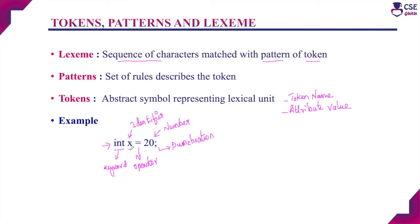Next, 'x' is an identifier. Considering 'x', it will not be matched with any reserved words in the list. Any combination of letters or digits is nothing but an identifier, so 'x' is an identifier. The equal sign will be compared by the pattern and will match with the operator, so the token name is operator. '20' is a number, and semicolon will come under punctuation symbol. So the lexical analyzer initially recognizes input characters into a meaningful group called a lexeme. The rules applied to identify a token form the pattern, and the final lexical unit — whether keyword, identifier, or operator — is called the token.